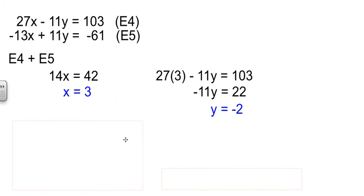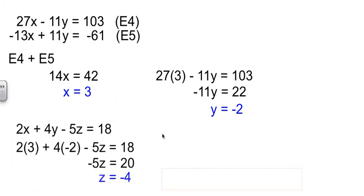Now I have X and Y. I can plug those in to one of the original equations. 2 times 3 is 6. 4 times -2 is -8. So together, this is -2. Add 2 over, we get 20. Divide by -5 gives us -4. So our final solution is (3, -2, -4).